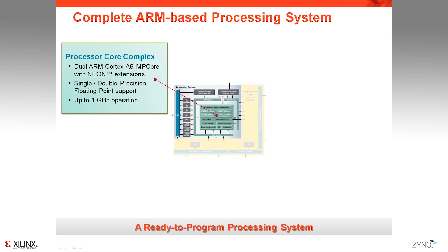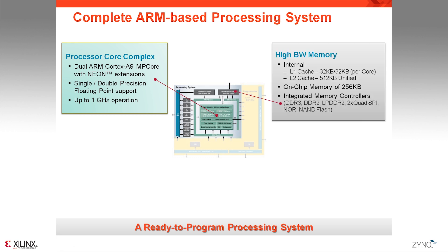Let's take a deeper look at the processing system. At the core of the Zynq 7000 processing system, you have one of the most advanced processors available on the market — the ARM Cortex-A9. Actually, you have two of them, each having their own NEON engine for multimedia processing and a vector floating point engine for advanced arithmetic applications. There are several speed grades available, and you can select a device with a processor running at up to 1 GHz. Each processor has its own Level 1 cache of 32 KB of data and 32 KB of instruction, and both share a unified 512 KB Level 2 cache.